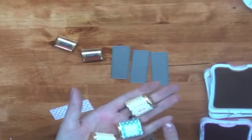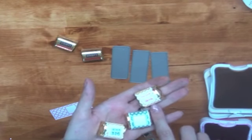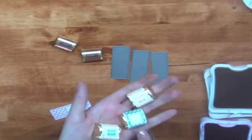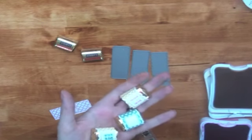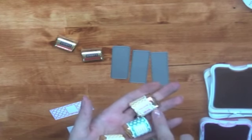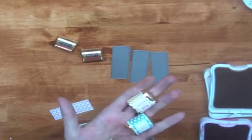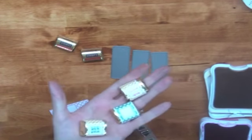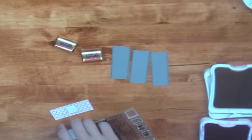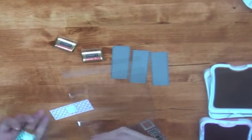Then I stamped this one with a chevron and this one with polka dots and this one with chevrons, and then I just filled in little sentiments that come on the stamp set. This one says 'Wow you're awesome,' this one says 'Hi,' and this one says 'Wish big.'